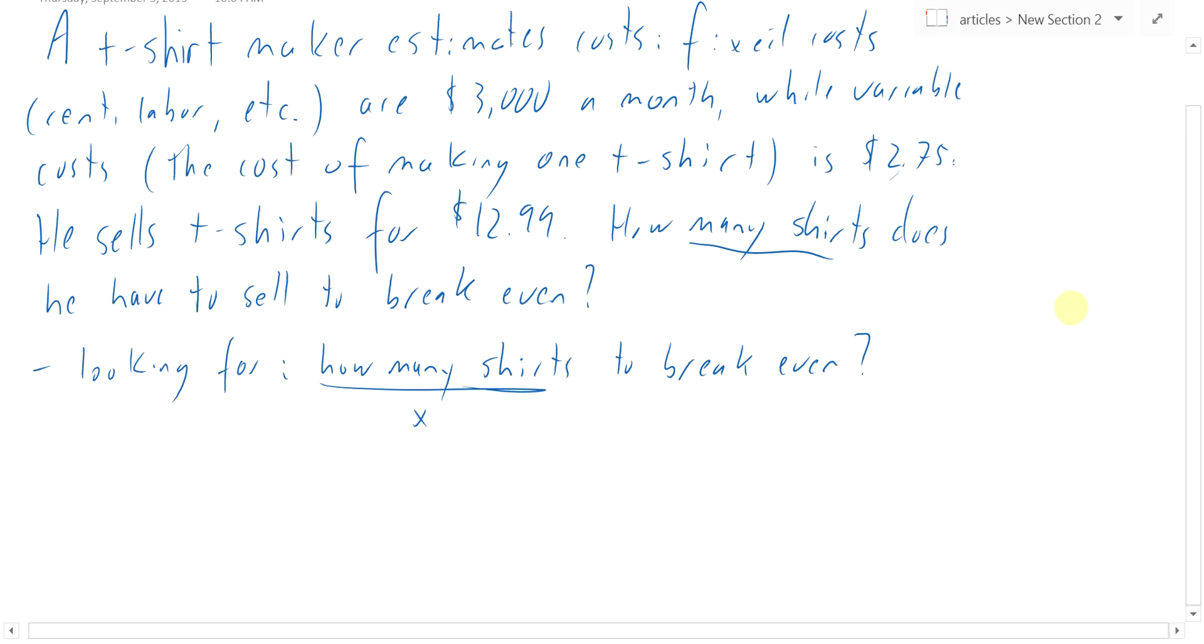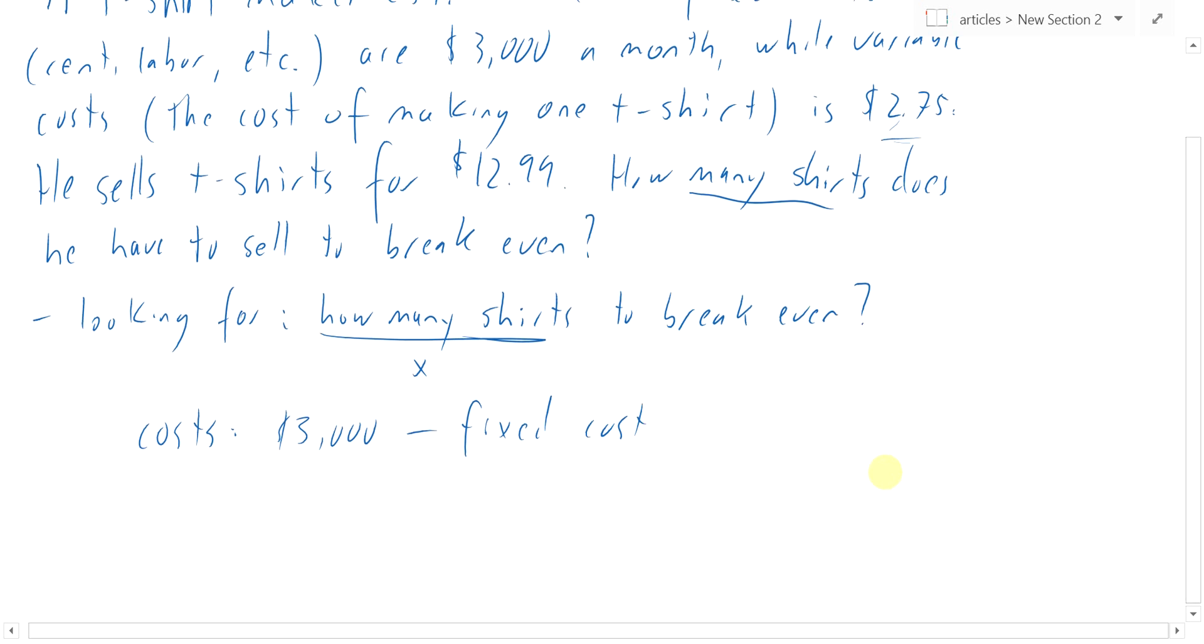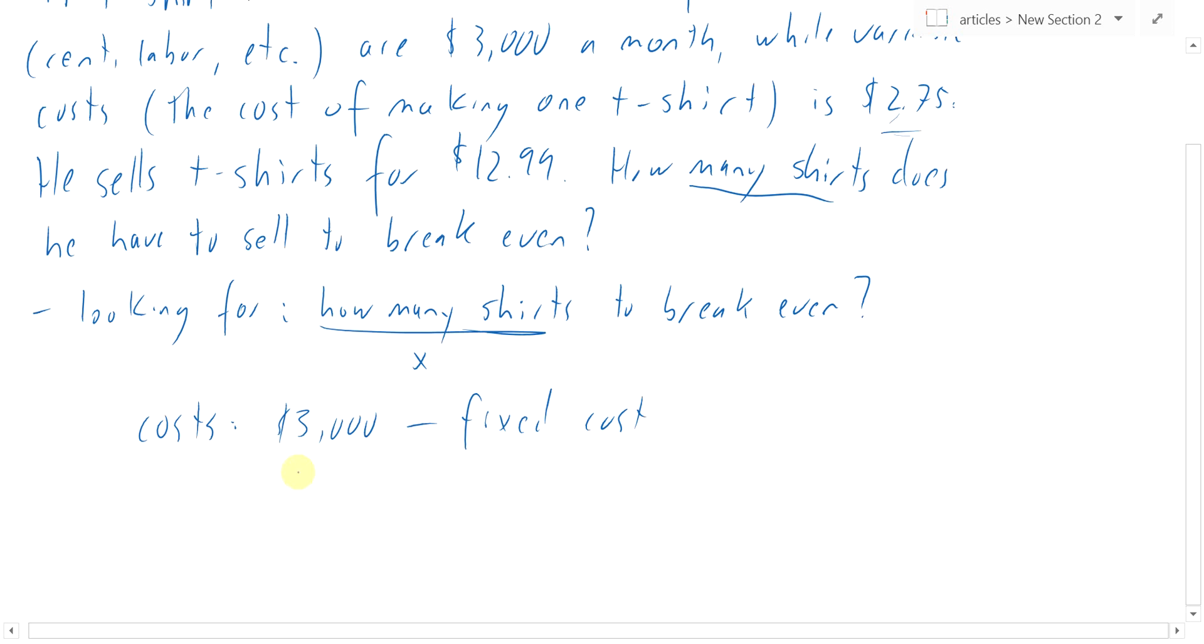So what are his costs? Well, $3,000, that's the fixed cost. And then he has a cost of $2.75 for each shirt he makes. So if he makes x shirts, that's the variable cost, right? $2.75 times x.